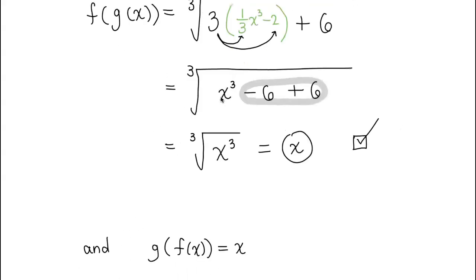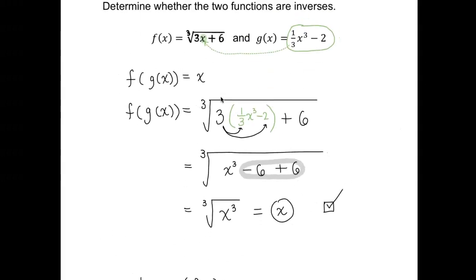Cube root and that exponent of 3 will cancel out, so I only have x out. And look at that, that's what we wanted to see, right? If two functions are inverses of each other, if you do a composition with them, f of g of x and g of x, they both need to come out to be x. So look, it met the first condition, so now we get to go and do the composition the other way.